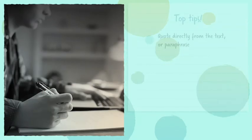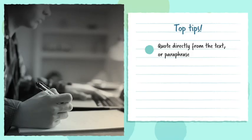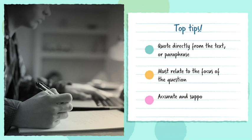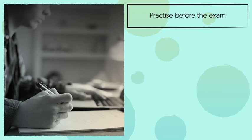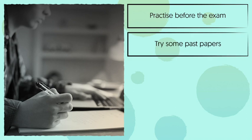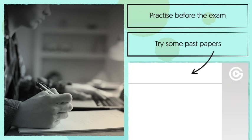Our top tips for Questions 1 and 2 are: you can quote directly from the text or paraphrase; your response needs to relate to the focus of the question; and it has to be accurate and supported by the text — don't assume. It's always a great idea to get some practice in before the exam, so why not try some past papers and see how you do with AO1. You could take a look at the text and questions in our example paper linked to this video and have a go at answering yourself. Good luck!